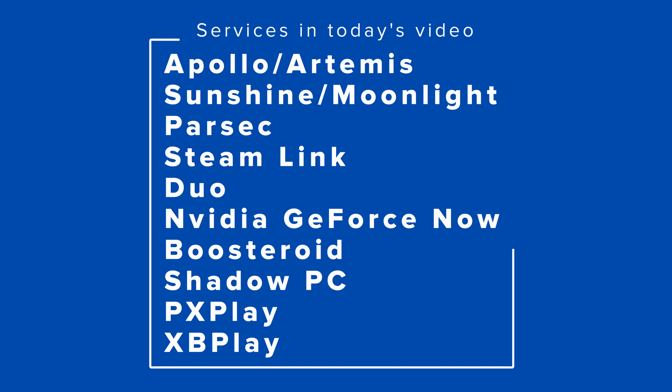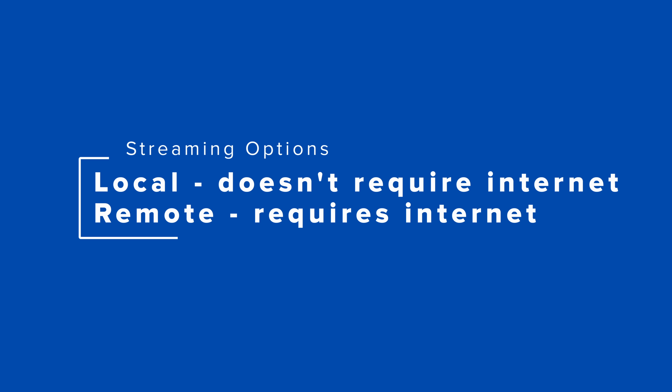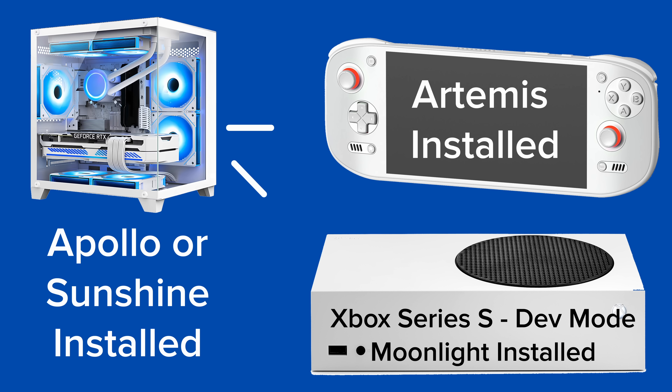This is going to be a bird's eye view of streaming as a whole, so we won't get too in the weeds with really anything. It's meant to be a more introductory beginner's guide. Right off the bat, we have to classify the different streaming options because there is local streaming and then there is remote streaming. Local streaming is where you would use something like Moonlight or Artemis on your device, and you would stream from your actual gaming PC on your own network using software like Sunshine or Apollo.